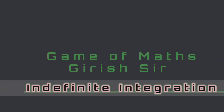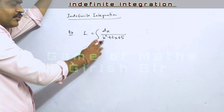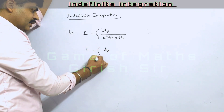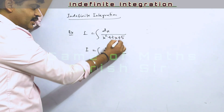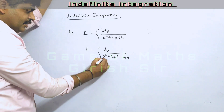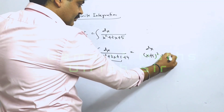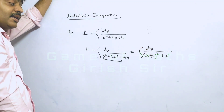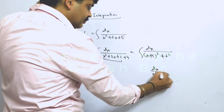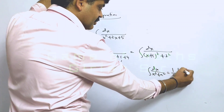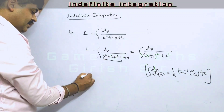Let's see an example. Step 1: check the coefficient of x squared — it is already 1. Step 2: make a perfect square from terms containing x. We have x² + 2x. Writing 5 as 1 + 4, these three terms combine to make a perfect square. Comparing this expression, the integral now matches the standard type dx/(x² + a²), so we can use that formula directly.